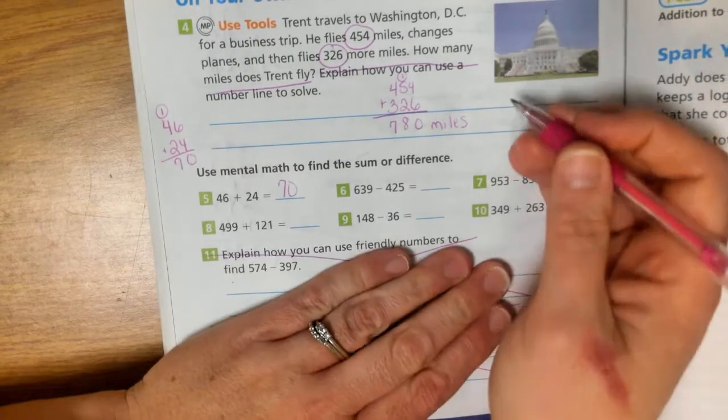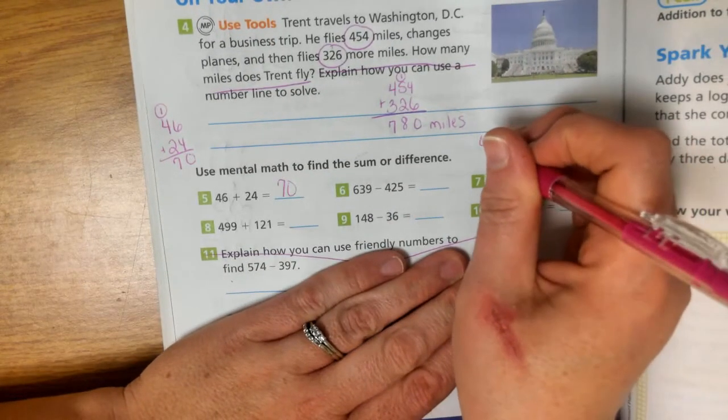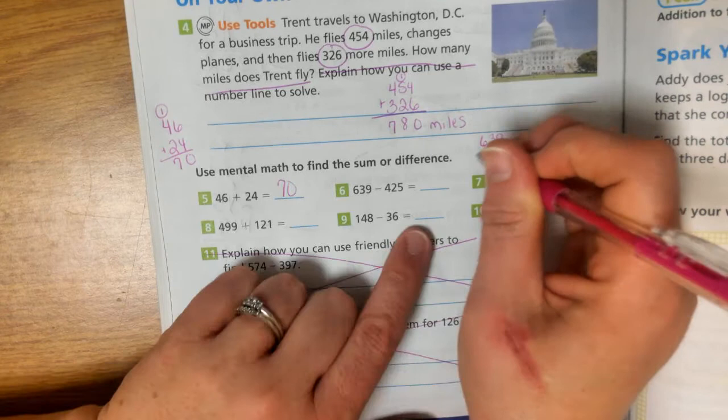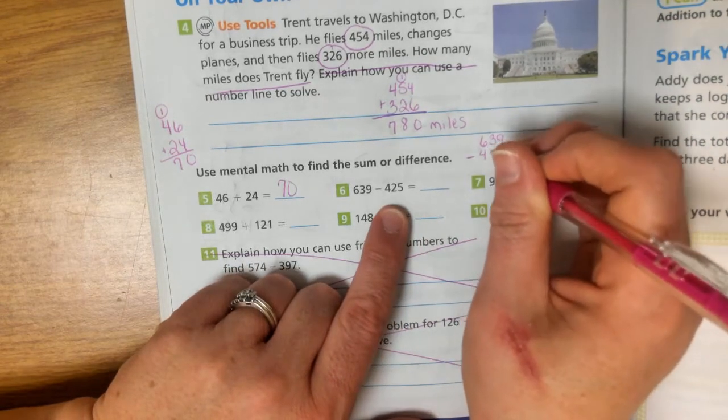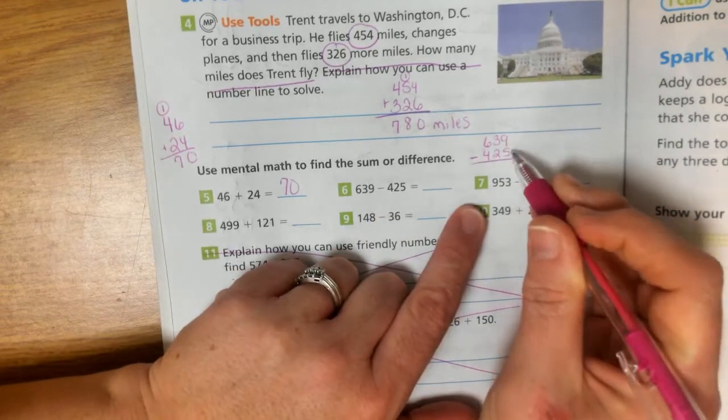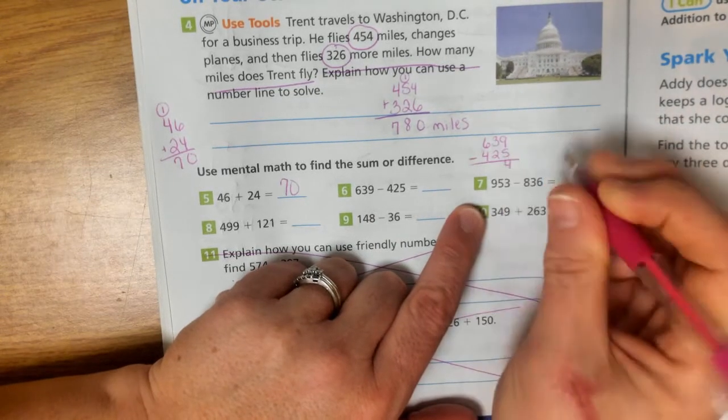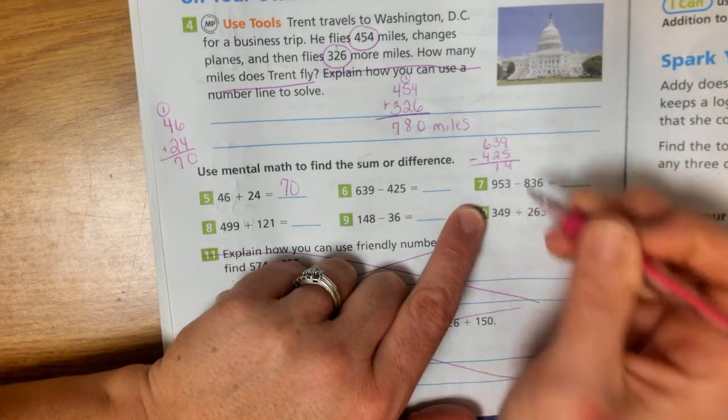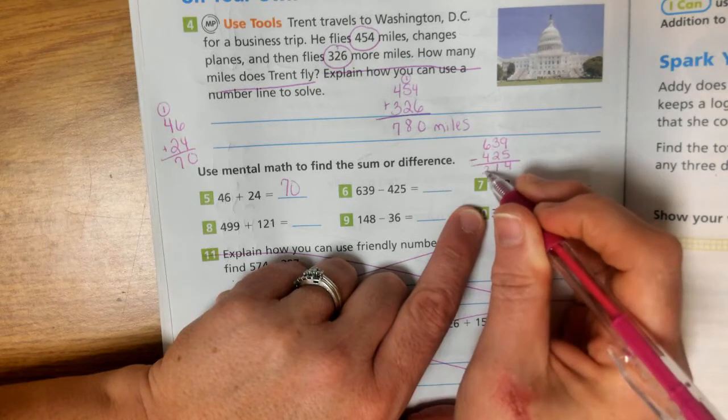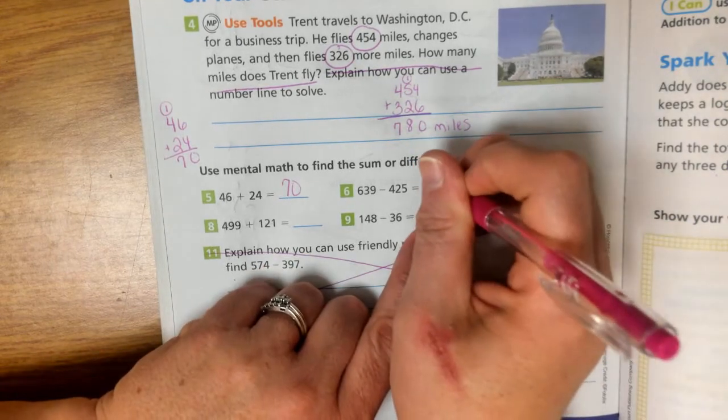Number 6 is a subtraction problem. So we have 639 minus 425. 9 minus 5 is 4. 3 minus 2 is 1. 6 minus 4 is 2. 214.